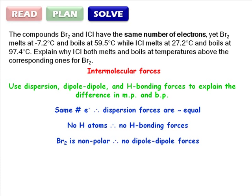ICl, on the other hand, contains one chlorine and one iodine atom. Chlorine is more electronegative than iodine, so it draws electron density from the iodine atom.